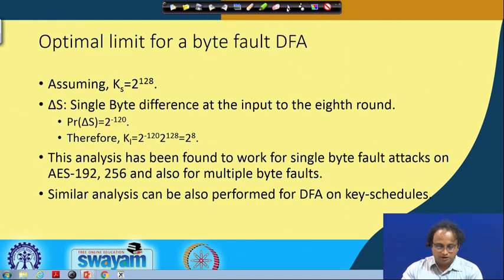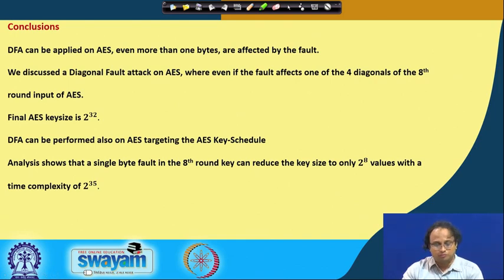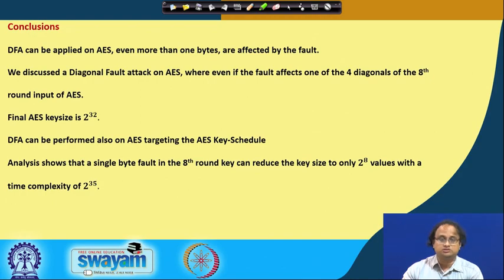To conclude: DFA can be applied on AES even when more than one byte is affected, which we discussed in the form of a diagonal fault attack on AES. We have seen that even when one of the four diagonals of the 8th round is affected, the final AES key size can be 2^32 with a single fault induction. DFA can also be performed on AES targeting the AES key schedule, and analysis shows that a single-byte fault in the 8th round key can reduce the key size to only 2^8 values with a time complexity of 2^35. Thank you for your attention.